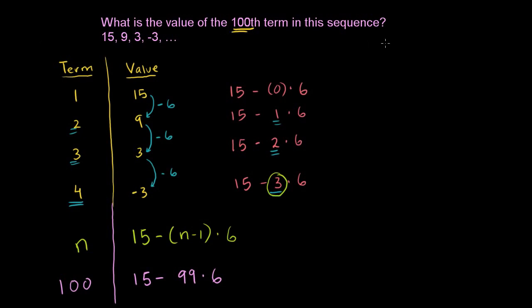So let's calculate what this is. What's 99 times 6? Actually, you could do this in your head. That's going to be 6 less than 100 times 6, which is 600, and 6 less is 594. But if you didn't want to do it that way, you do it the old-fashioned way. 6 times 9 is 54. Carry the 5. 6 times 9 is 54. 54 plus 5 is 594.